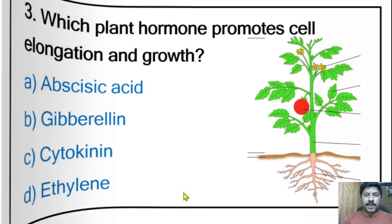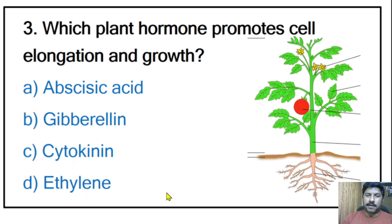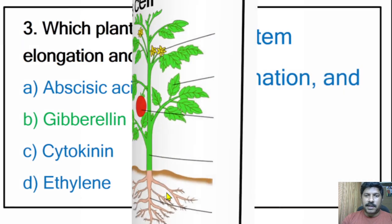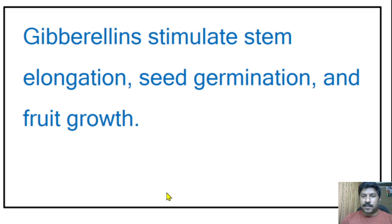Third question: which plant hormone promotes cell elongation and growth — abscisic acid, gibberellin, cytokinin, or ethylene? The correct answer is gibberellin. Gibberellin stimulates stem elongation, seed germination, and fruit growth.